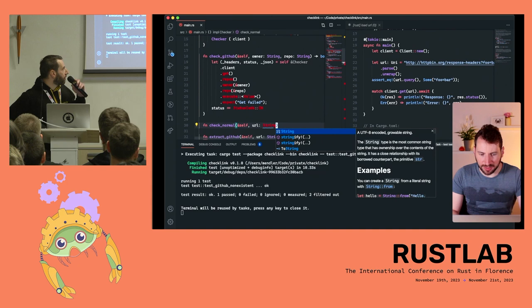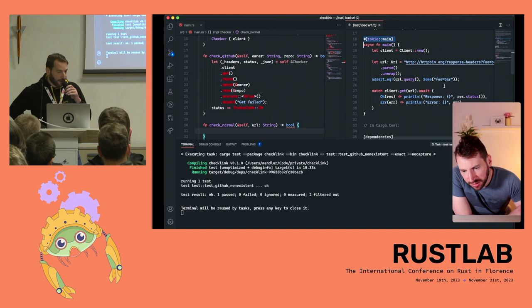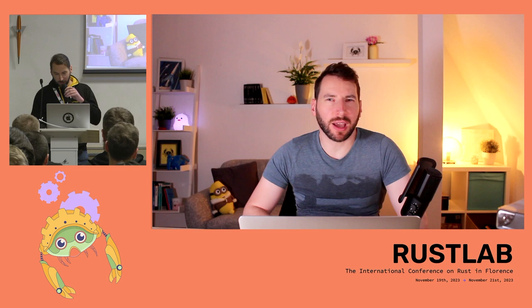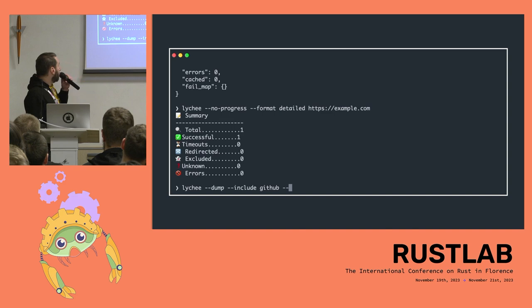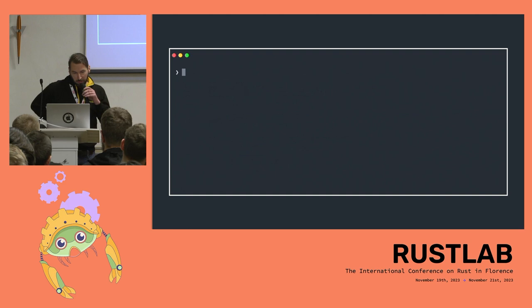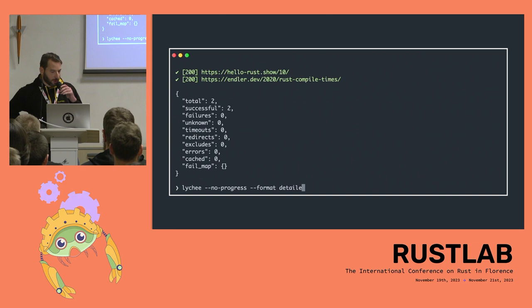I had a YouTube channel in the past called HelloRoss, and I live-coded it in a weekend. It sort of worked, so I got to work. At the end of the day, you run it from the command line and it has a couple of commands. For example, you can dump all the links that include GitHub, or check all the links in a readme. It gives you a progress bar and verbose output in different formats. So it has quite a lot of features.